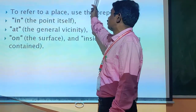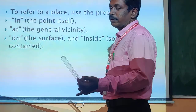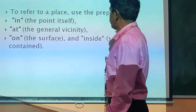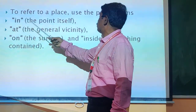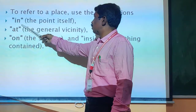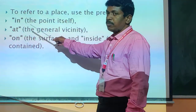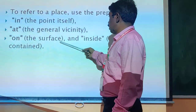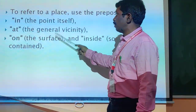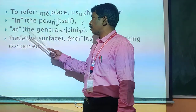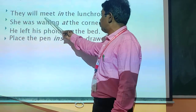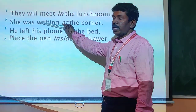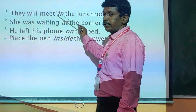The next type is preposition of place. We have seen preposition of direction and preposition of time; the third one is preposition of place. To refer to a place, use the preposition 'in'. It is used for the point itself — a particular point. It has a general sense covering a surface and inside something contained. For example: They will meet in the lunch room — 'in' shows where they will meet, not any other room.